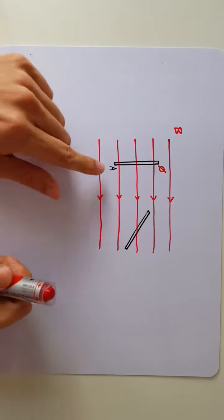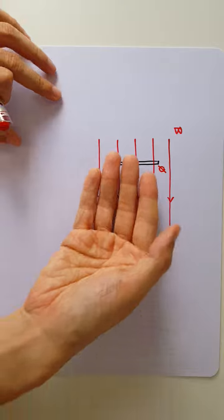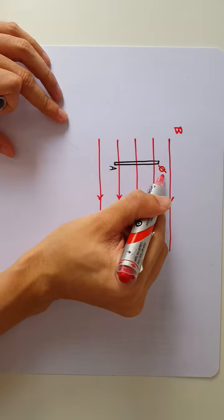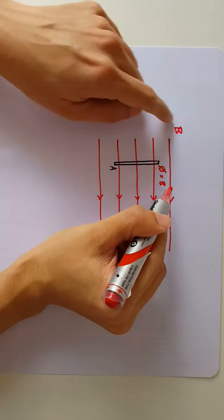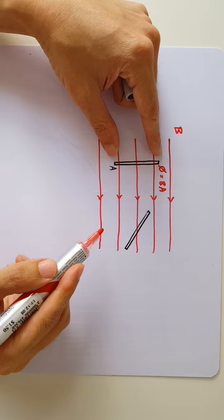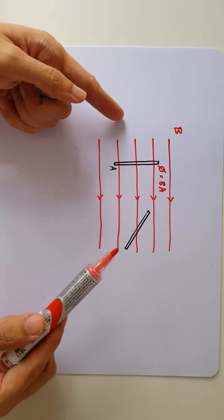So in the first case here, the area of the coil is perpendicular to the magnetic field. So the amount of flux that's captured is simply the magnetic flux density times the area, because the entire area of the coil is facing the magnetic field.